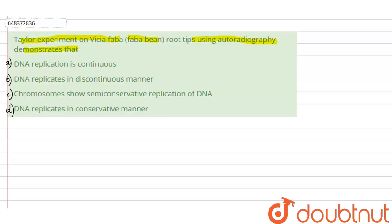So now let us understand what he did on the Vicia faba. Now Taylor was a scientist who conducted his experiment on the Vicia faba, and this Vicia faba plant is also known as faba beans.